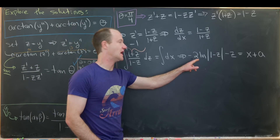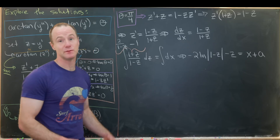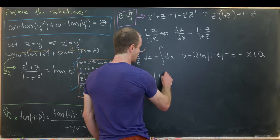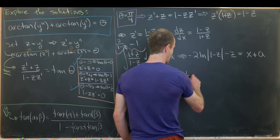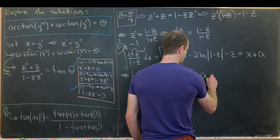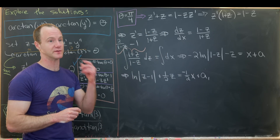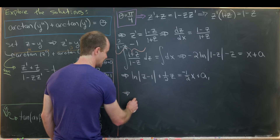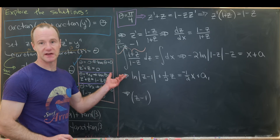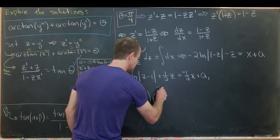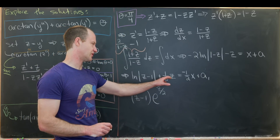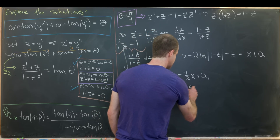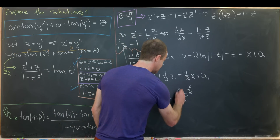Dividing both sides by −2 and rearranging gives ln|z − 1| + z/2 = −x/2 + a₁. Exponentiating both sides to eliminate the natural log: (z − 1)·e^(z/2) = A·e^(−x/2), where A = e^(a₁). Multiplying both sides by e^(−1/2) to adjust the exponent, we get (z − 1)/2 · e^((z−1)/2) = A·e^(−x/2) in a form suitable for the Lambert W function.